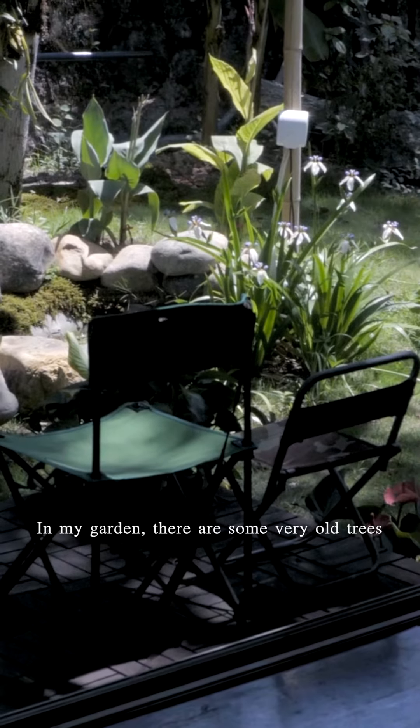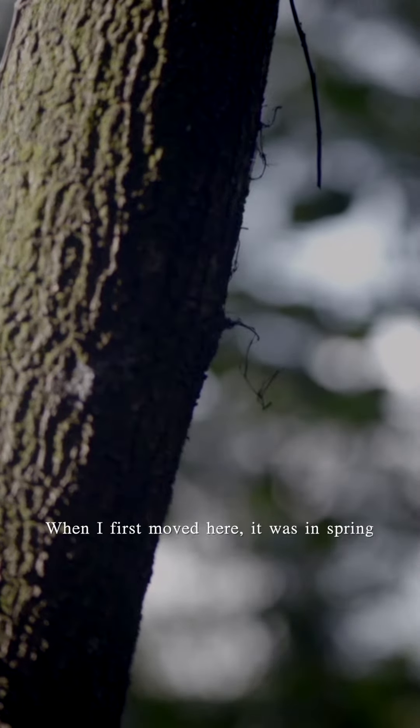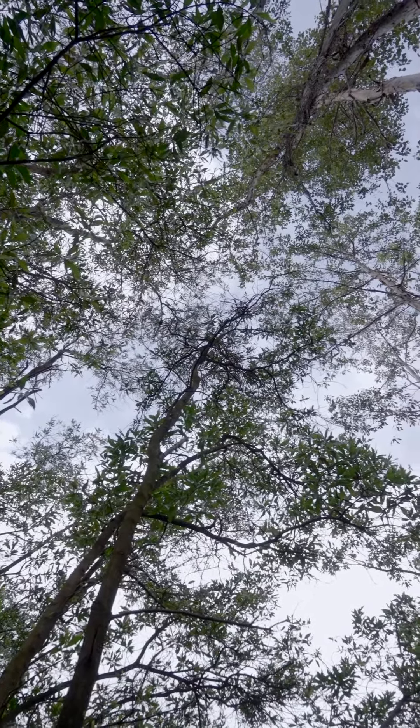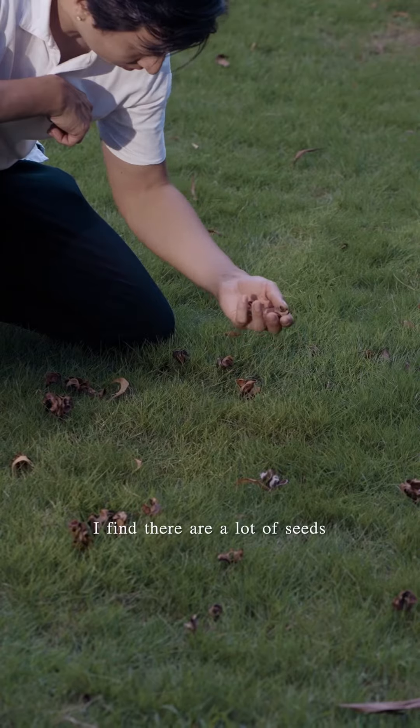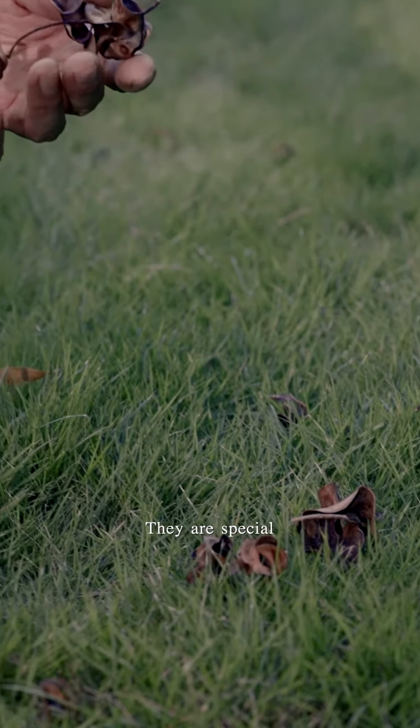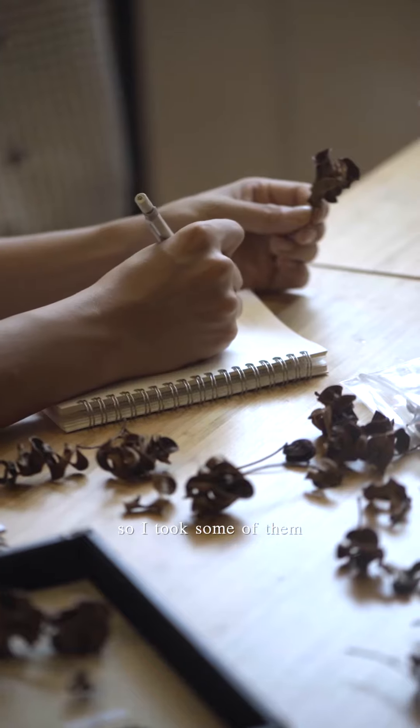In my garden there are some very old trees. When I first moved here, it was in spring and I was impressed by the leaves and their shape. When summer came, I found there were a lot of seeds falling down from the tree. They're very special—each one looks like a little spring, so I took some of them.